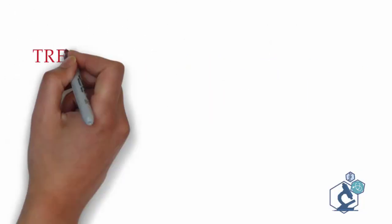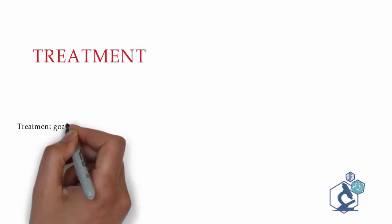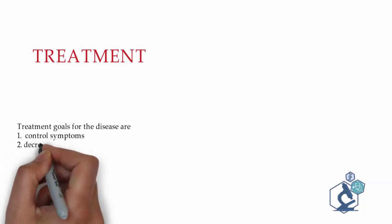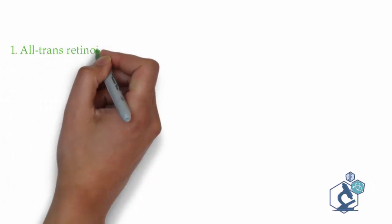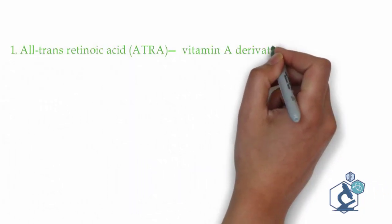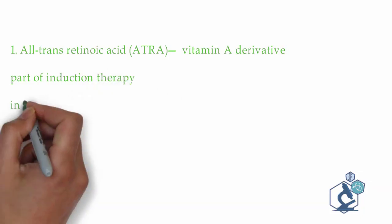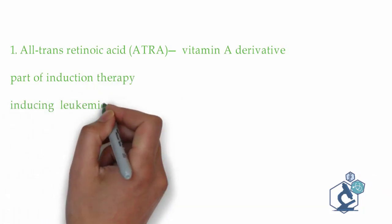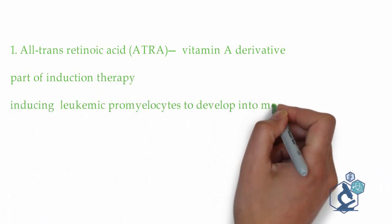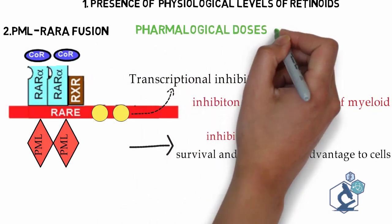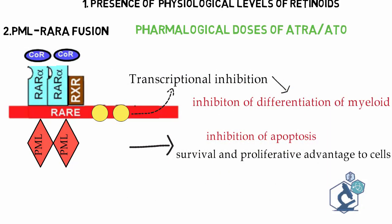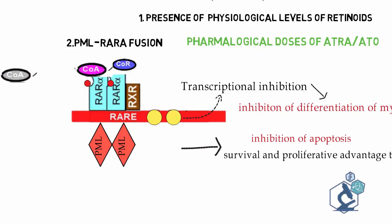Treatment goals for APML are to control symptoms and decrease the risk of complications. All-trans retinoic acid (ATRA) is a vitamin A derivative and is the cornerstone of treatment. As part of induction therapy, it induces leukemic promyelocytes to develop into mature cells. ATRA binds to the RAR-PML complex and recruits co-activators by displacing repressors.